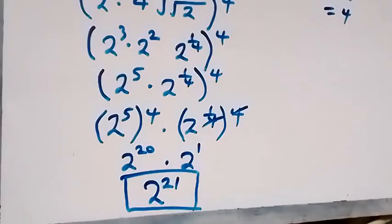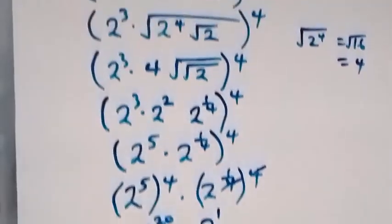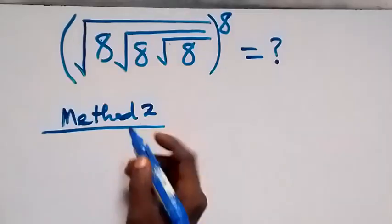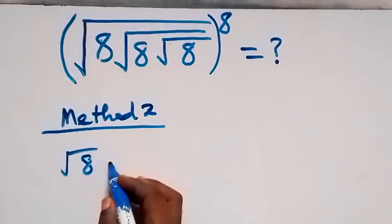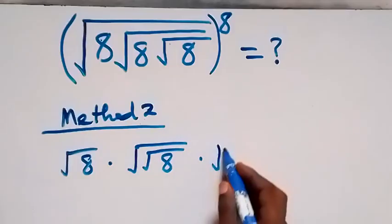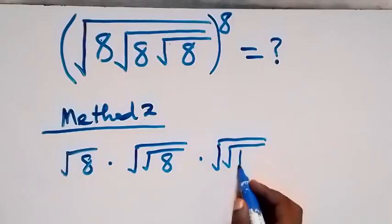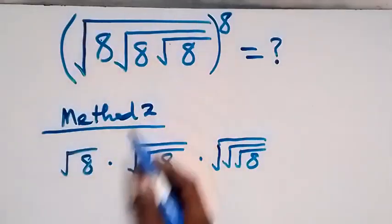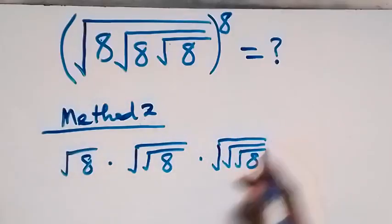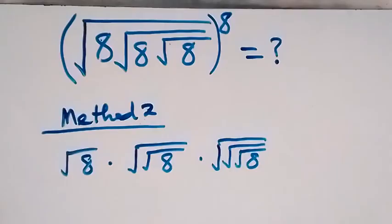So the solution from method one is two raised to power 21. Now let's look at the second method very quickly. From here we can separate this as root eight, times root of root eight, times also square root of square root of square root of eight — making three roots. The first one has just one root, the second contains two roots, and the third eight contains three roots, which is being raised to power eight.